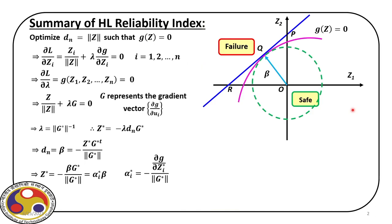We first defined the problem where we start with a limit state gx equal to 0. Once we define the problem gx equal to 0, we first convert the problem into gz equal to 0. So we start from x and then convert it into z, where z represents the standard normal random variables. Once we convert the problem into z space, this gz equal to 0 is represented by a non-linear pink line that you can see on your screen.